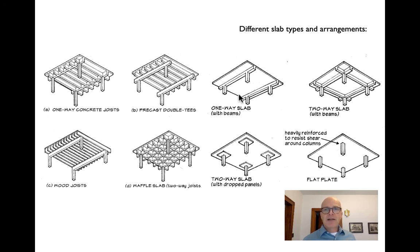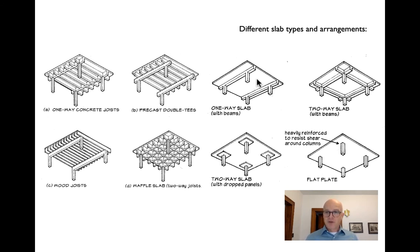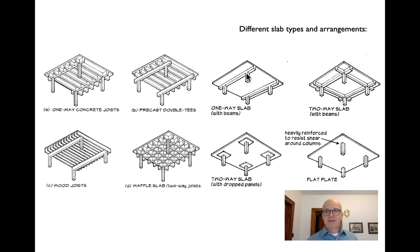A one-way slab is limited in the distance it can span — we try to keep these relatively short with relatively long proportions. With a flat slab, the problem is preventing columns from punching right through it. In this case, the one-way slab frames into very deep portions of the slab that act as beams integral with the slab. We rely on the depth of those beams to offer shear resistance when the load finally gets to the column.